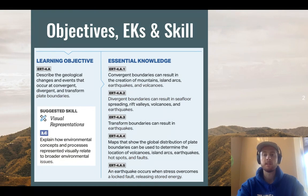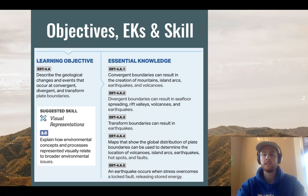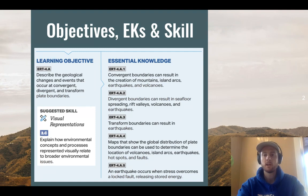Our objective for the day is to be able to describe the geological changes and events that occur at plate boundaries. In order to do that, we need to know that there are three plate boundary types: convergent, divergent, and transform fault boundaries. We'll also learn what types of events and landforms each of these can produce, and that earthquakes occur when stress overcomes a locked fault, releasing tons of energy. Our suggested science skill is explaining how visual representations of environmental concepts relate to environmental issues, using diagrams of plate boundary types and a map of global plate boundaries.